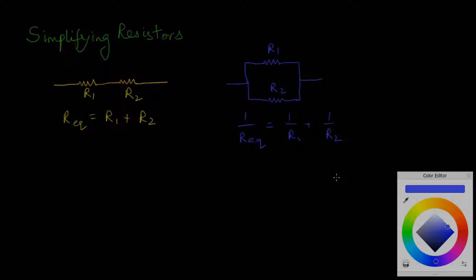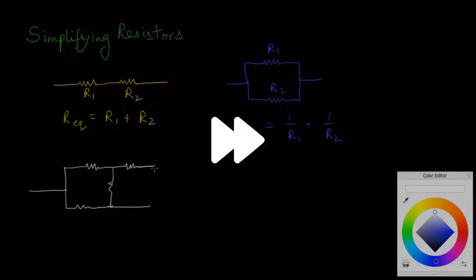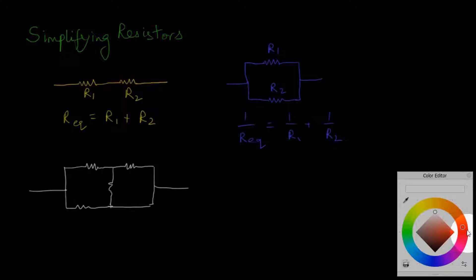What about those complex crazy huge resistor mazes? How do we solve them? So let's take a look at a different example. Let's say I have this maze. So how I'll solve this resistor maze is by finding the effective resistance across AB — I'll call that R_AB.